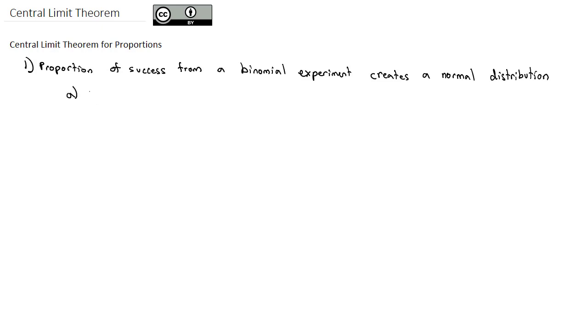Quick review about binomials. P is the probability of success. Q is the probability of failure. And we know that P plus Q, because those are the only two options in a binomial experiment, must give all the options or 100% of the results.